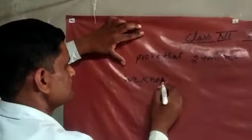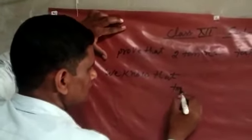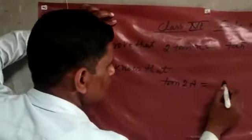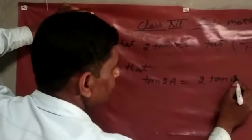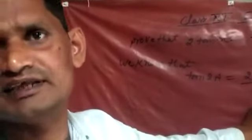We know that tan 2a equals 2 tan a upon 1 minus tan square a. You read this in previous class 11.